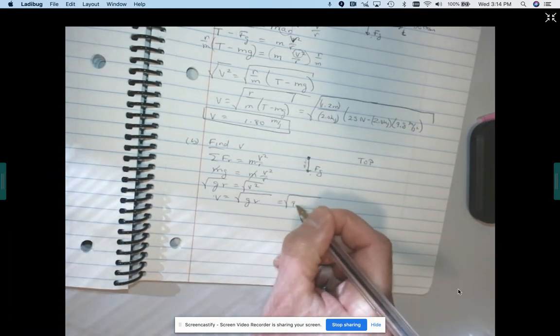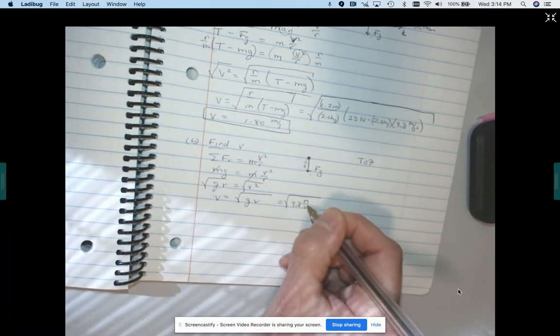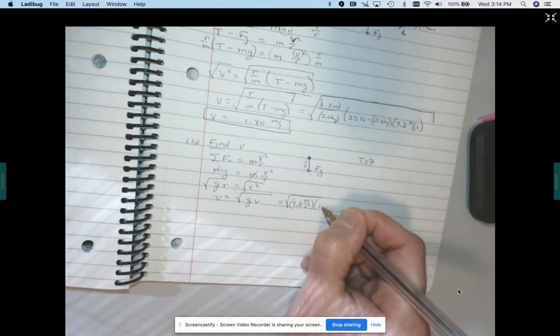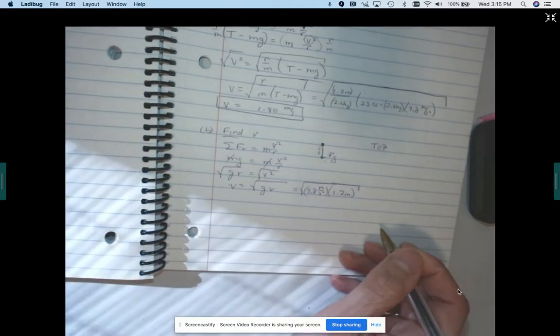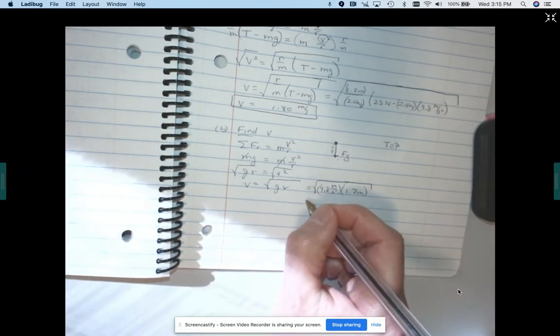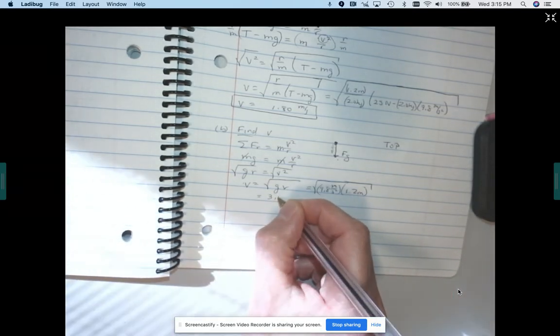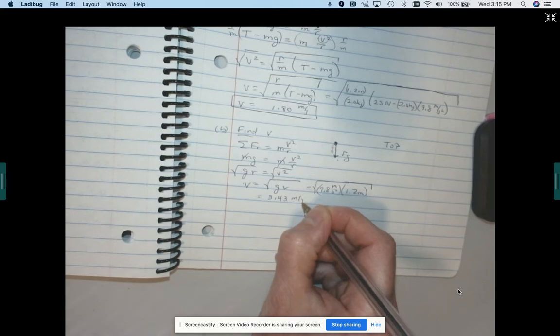So it's the square root of 9.8 meters per second squared times the radius, 1.2 meters. And when I plug in, I get 3.43 meters per second.